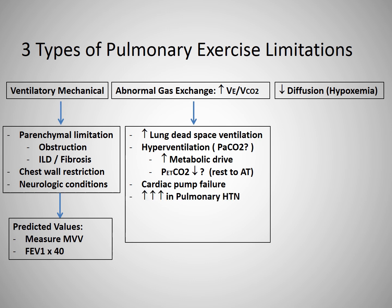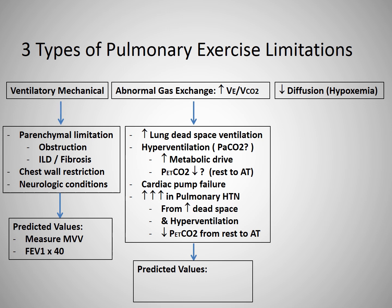In pulmonary hypertension patients, this ratio can be excessively elevated. In addition to abnormalities in dead space ventilation, there appear to be additional mechanisms involving a hyperventilatory response to exercise. Because of this, in the later stages of pulmonary hypertension, this is one of the unique situations in which the P end-tidal CO2 from rest to anaerobic threshold will decrease. Though the predicted values for VE to VCO2 increase with age, there is general agreement that at anaerobic threshold it normally should be less than 35, and at peak exercise, less than 40.